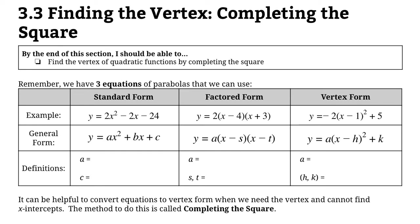Let's review some of the forms of the equations of a quadratic function. We have standard form, which looks like this: y equals ax squared plus bx plus c. The a value, your number in front of the x squared, always tells you whether your parabola opens up or down. When it's positive it opens upwards, when it's negative it opens down.